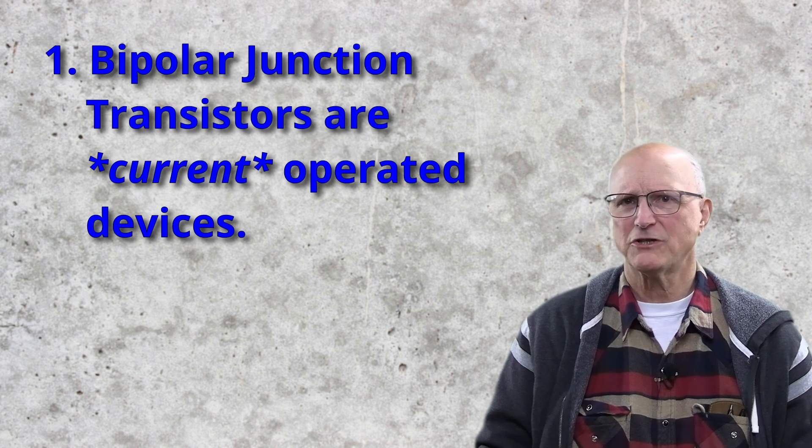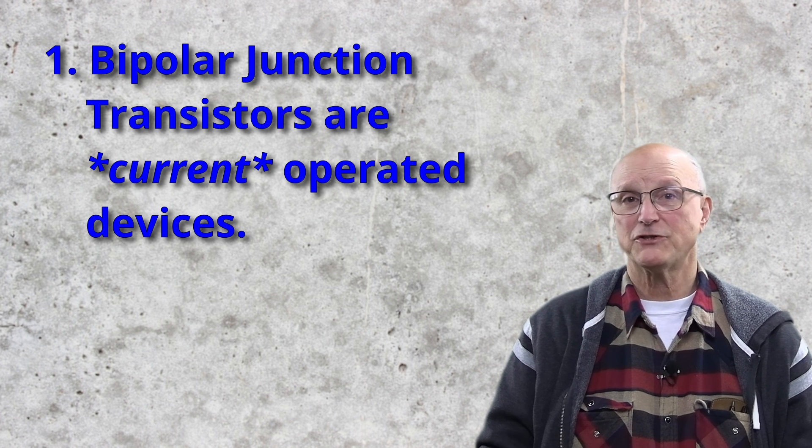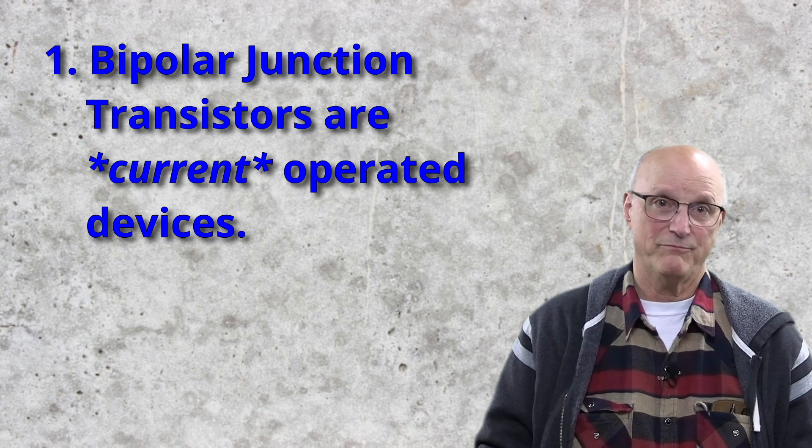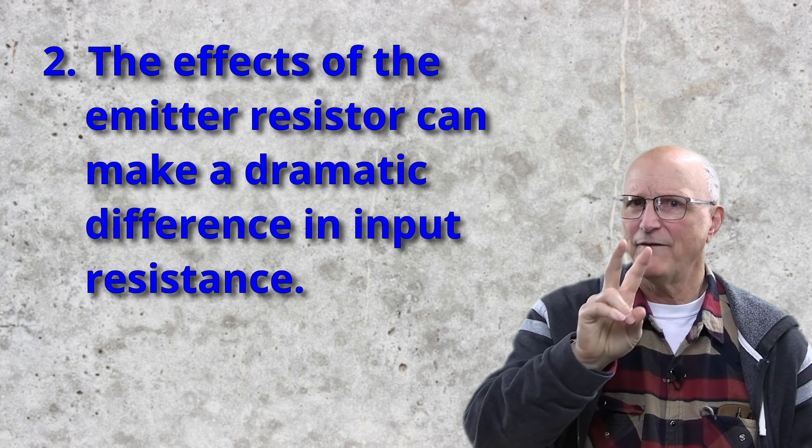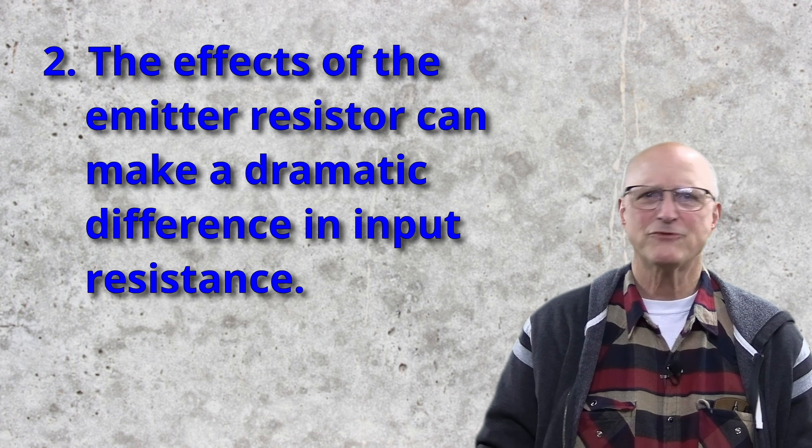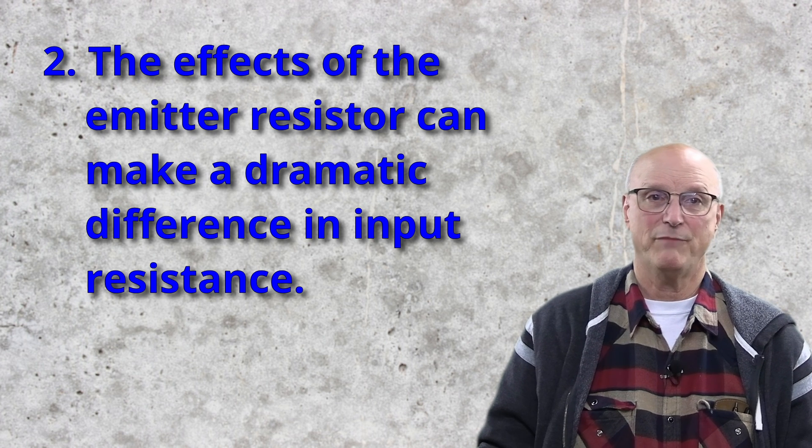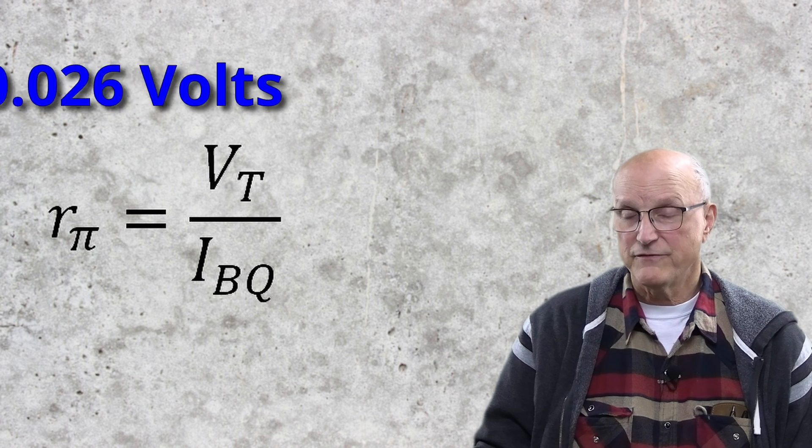The first is that we have to remind ourselves that bipolar junction transistors are current-operated devices. They respond to changes in base current and only indirectly to changes in base voltage. Second is the effects of the emitter resistor on the input resistance of the transistor. This effect makes a dramatic difference in the change in base current given a change in base voltage. The value of a transistor's input resistance, Rpi, is equal to the thermal voltage Vt, which is 0.026 volts at room temperature, divided by the quiescent base current.